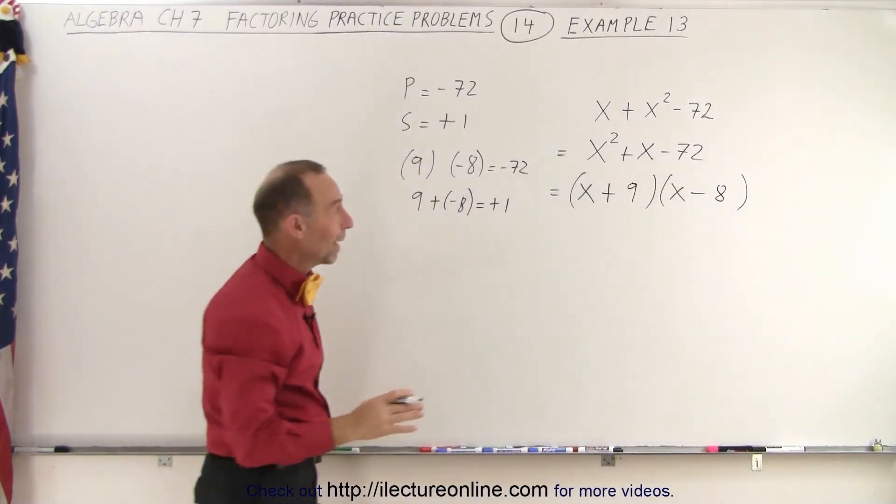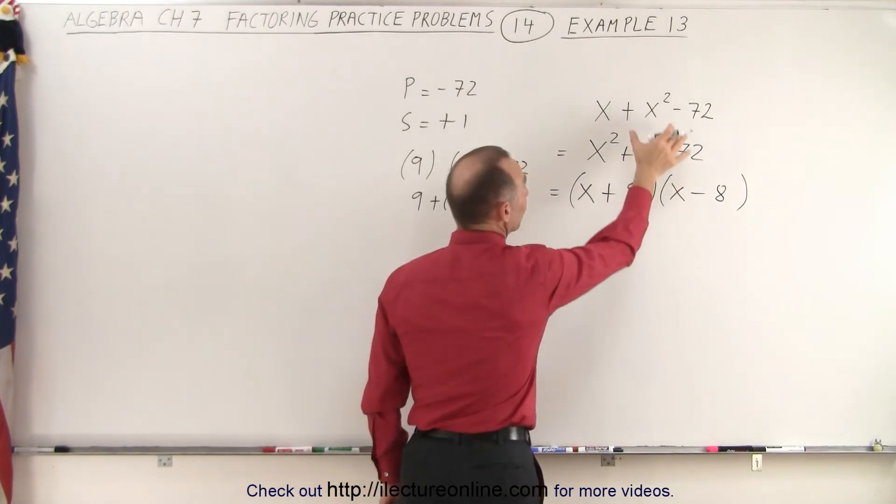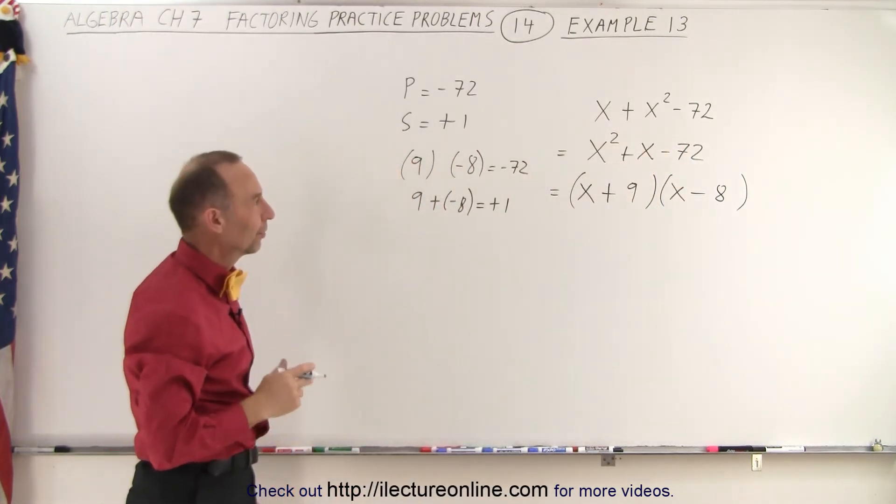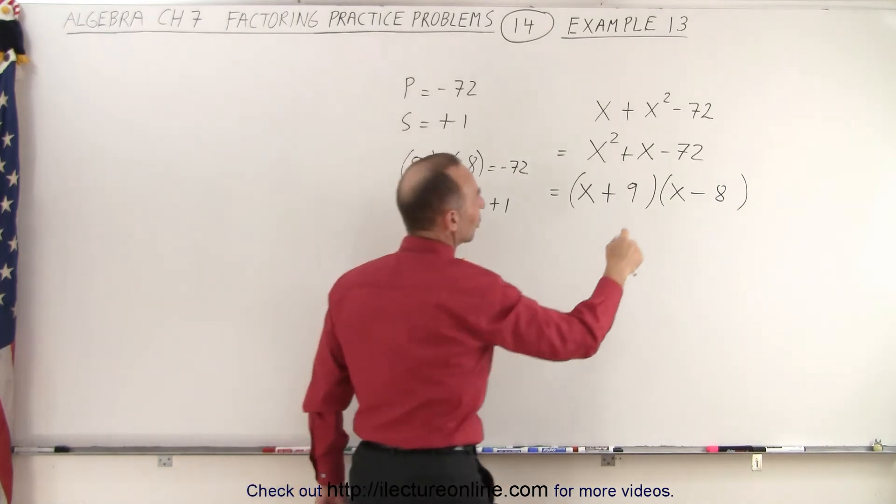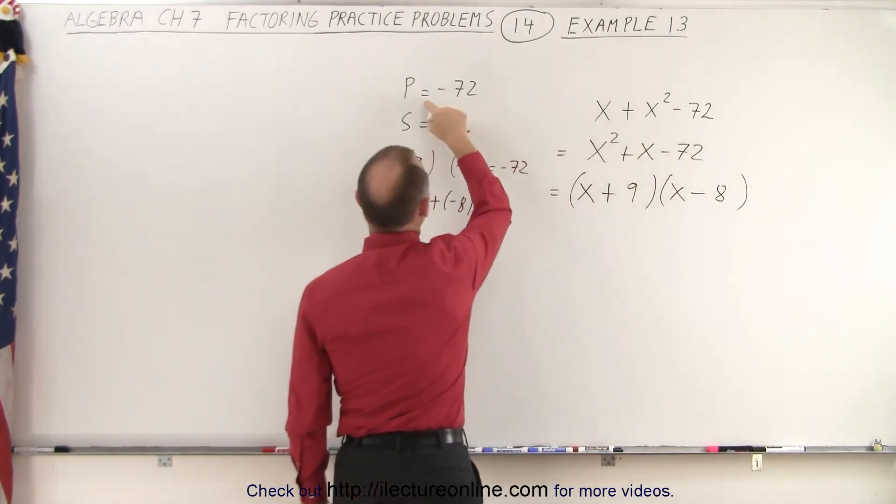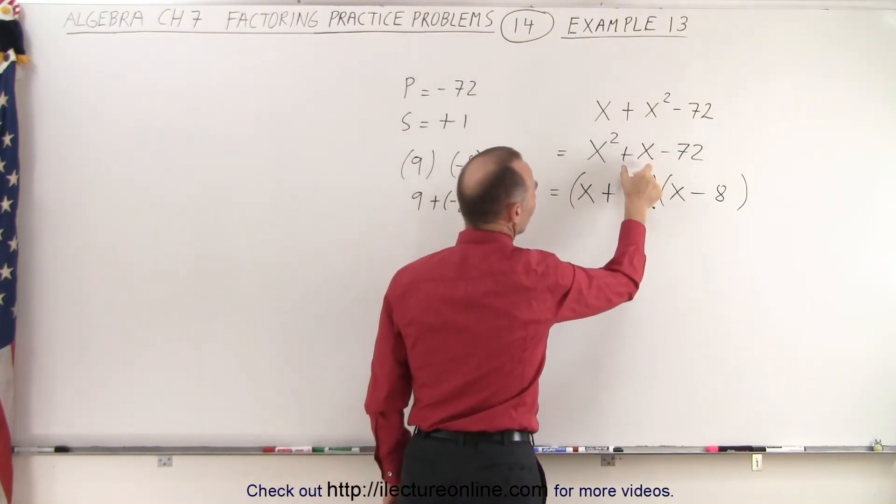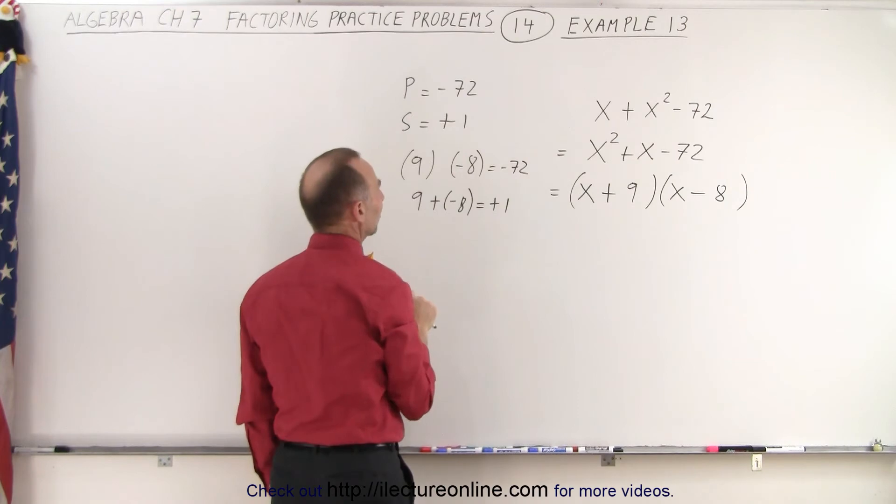If I now multiply those back out again, then I get the original problem back. And so I know that I did it correctly. So again, the way to do that is to look at the last number here. And I say the product must therefore be negative 72. And when I look at the middle term, that the sum of the two numbers must add up to a positive 1.